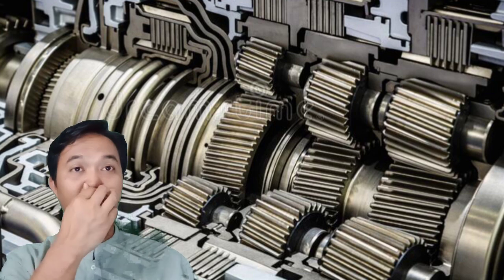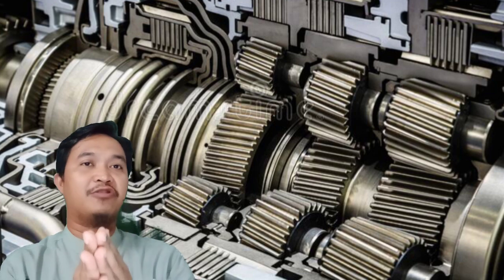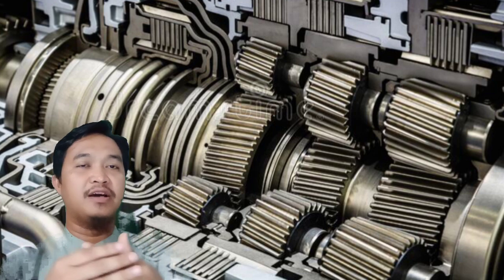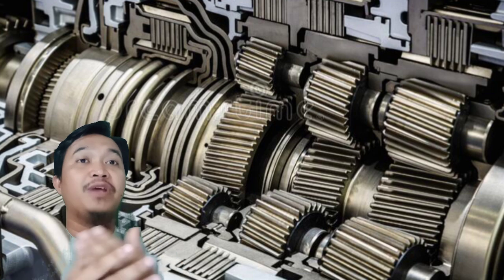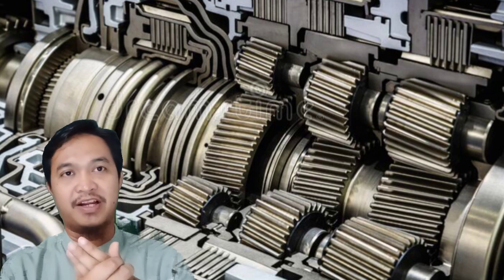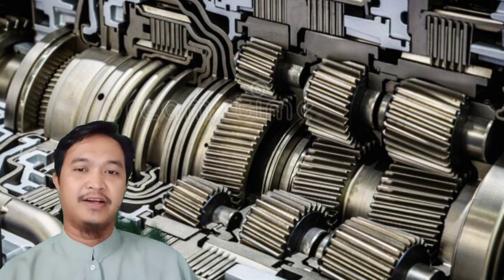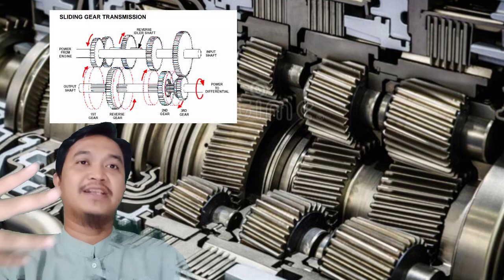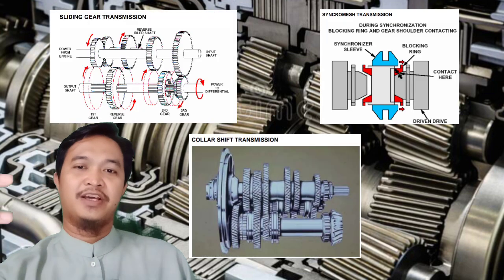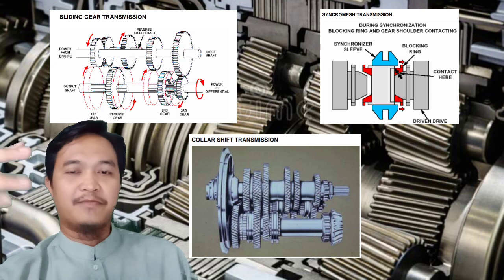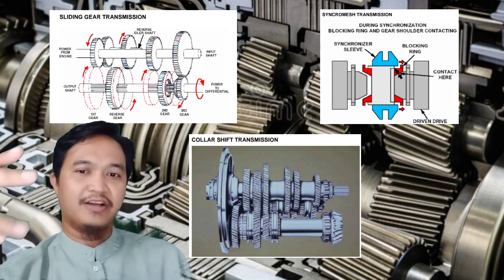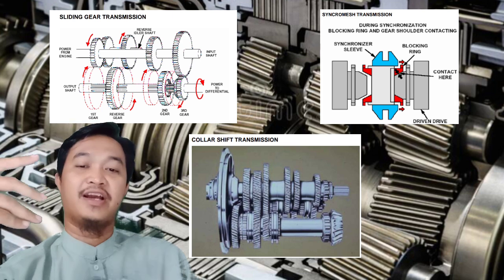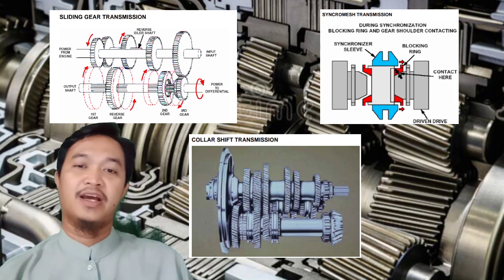Terkait pembahasan hydrostatic transmission ini. Yang pertama adalah manual shift transmisi. Biasanya ada di equipment atau unit-unit tipe lama, dan masih dipakai di mobil atau light vehicle. Jenisnya manual shift transmission itu dibagi lagi menjadi tiga: yang pertama adalah sliding gear, kemudian collar shift atau sliding collar, dan yang ketiga adalah synchronous.